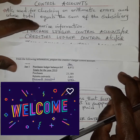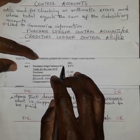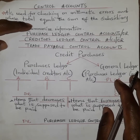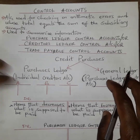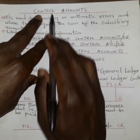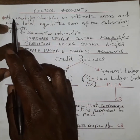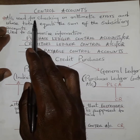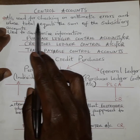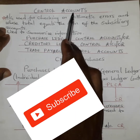Welcome. Today I want to introduce you to a question reflecting on the purchases ledger control account. Before that, I just want us to have an overview of what control accounts actually are. Control accounts, just as the name suggests, are used to check on arithmetic accuracy, and their totals equal the sum of the subsidiary accounts.